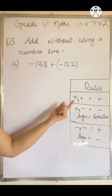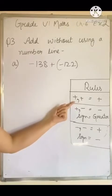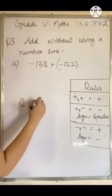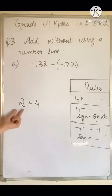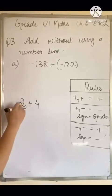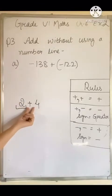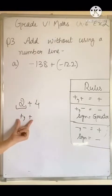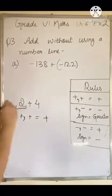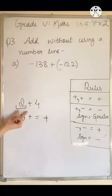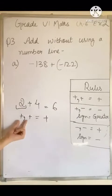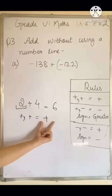Rule number 1: if both integers have a positive sign, we are going to add them. For example, 2 plus 4. Here 2 does not have any sign in front of it, which means 2 is positive, and 4 also has a plus sign. Whenever both integers are positive, we always add them. So 2 plus 4 equals 6.